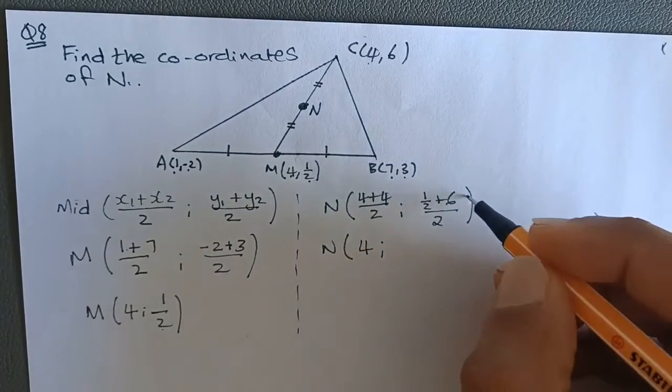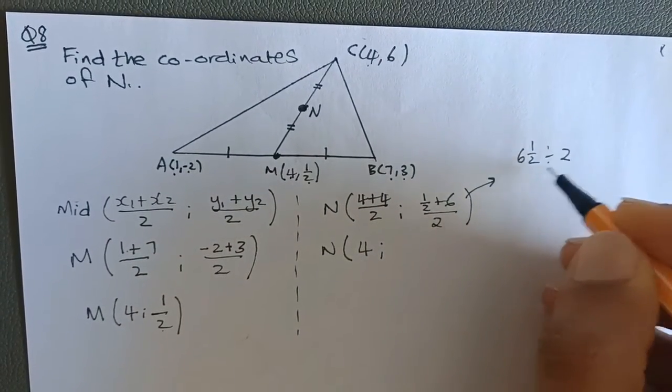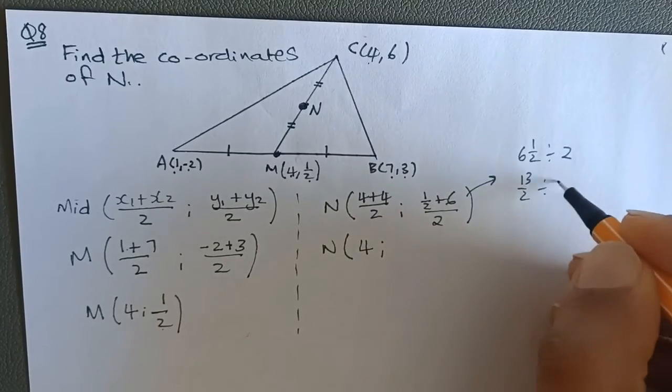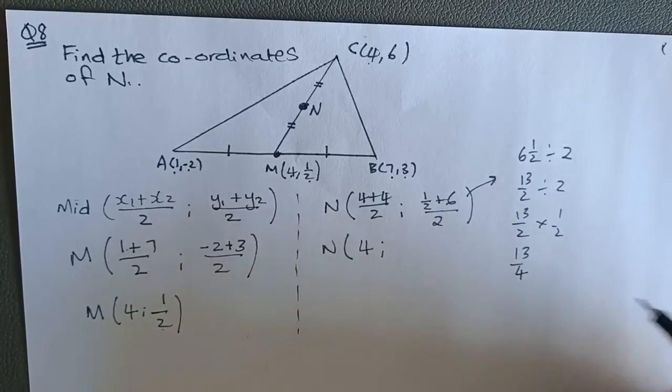I can also simplify this if I want to: 6 and a half divided by 2, which is 6 times 2 is 12, plus 1 is 13 over 2, divided by 2, multiplied by half, which is 13 over 4.